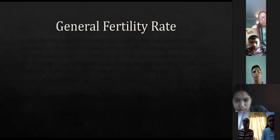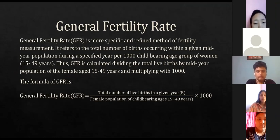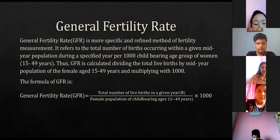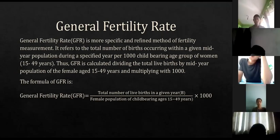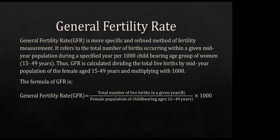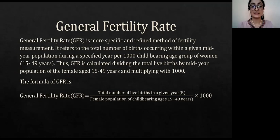General fertility rate is a more specific and refined method of fertility measurement. It refers to the total number of births occurring within a given mid-year population during a specified year per 1,000 childbearing age group of women aged 15 to 49 years. GFR is calculated by dividing the total live births by mid-year population of females aged 15 to 49 years and multiplying by 1,000. The formula is: total number of live births in a given year divided by female population of childbearing ages 15 to 49 years, multiplied by 1,000.